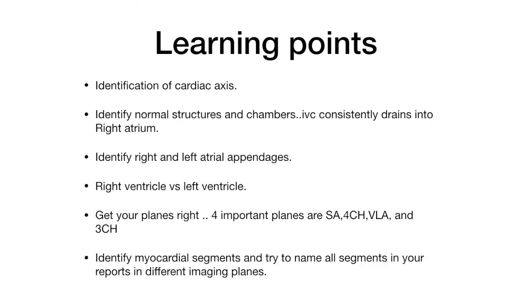The key learning points are: identification of the cardiac axis is very important; identify normal structures and chambers; the IVC consistently drains into the right atrium, and if the right atrium drains into the right ventricle, that connection is normal; identify right and left ventricular appendages; learn to differentiate the right ventricle from the left ventricle; and get your planes right. The four most important planes are short axis, four-chamber, vertical long axis, and three-chamber. If you get these right, your anatomical and functional evaluation will be optimal. Finally, identify all myocardial segments and name them in your report across different imaging planes to reach a diagnosis. Thank you very much.